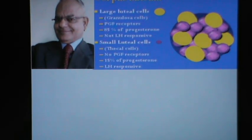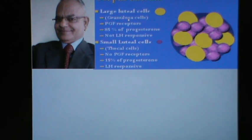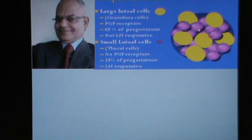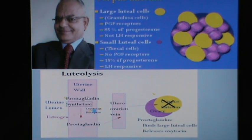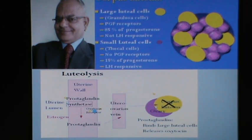The corpus luteum formed on the ovary has two types of cells. The large luteal cells originate from the granulosa cells; they have PGF2-alpha receptors and produce 85% of the progesterone, but are not LH responsive. The small luteal cells originate from the thecal cells; they don't have prostaglandin receptors and produce 15% of the progesterone, but are LH responsive. Luteolysis or regression of the corpus luteum during an estrus cycle is caused by prostaglandin released from the uterine endometrium, which reaches the ovary through the utero-ovarian vein by the counter-current exchange mechanism, binding to large luteal cells and blocking blood supply to the CL.